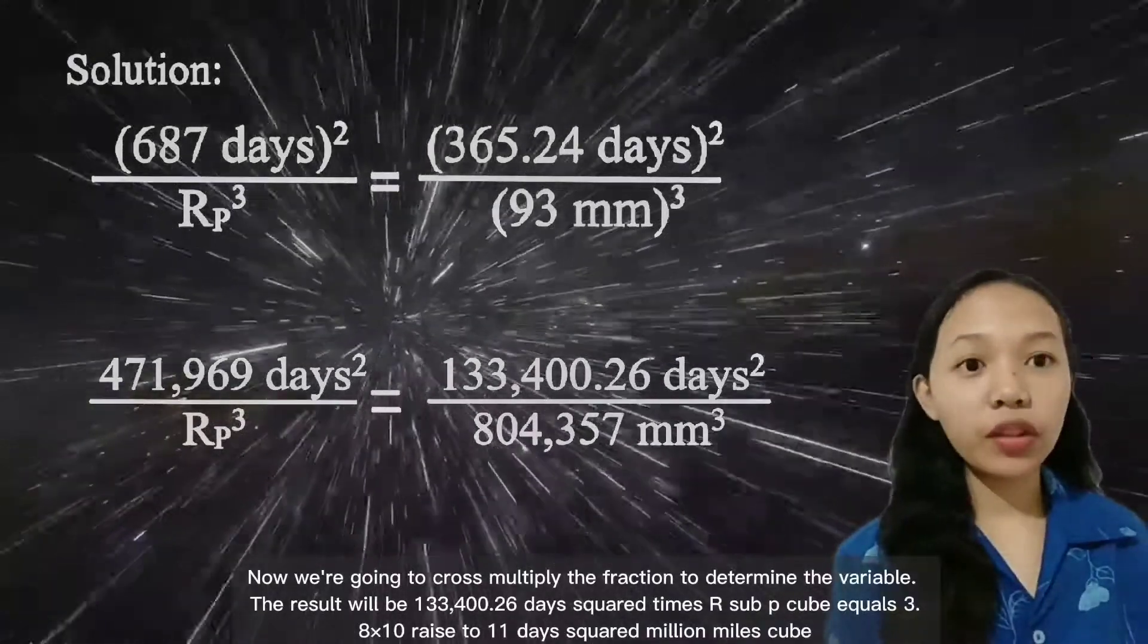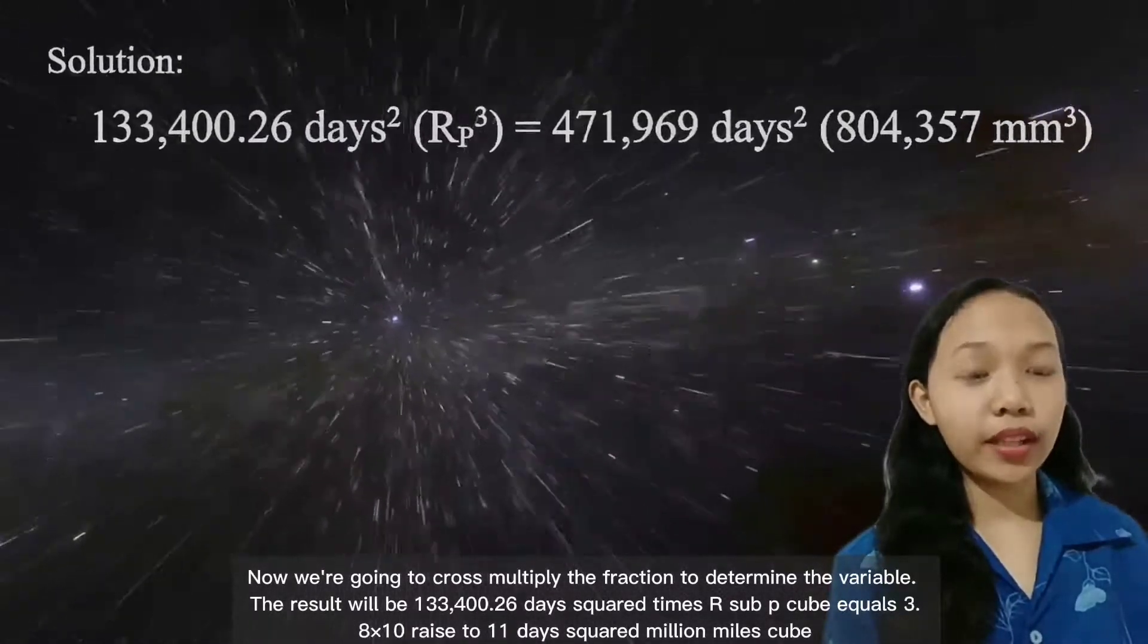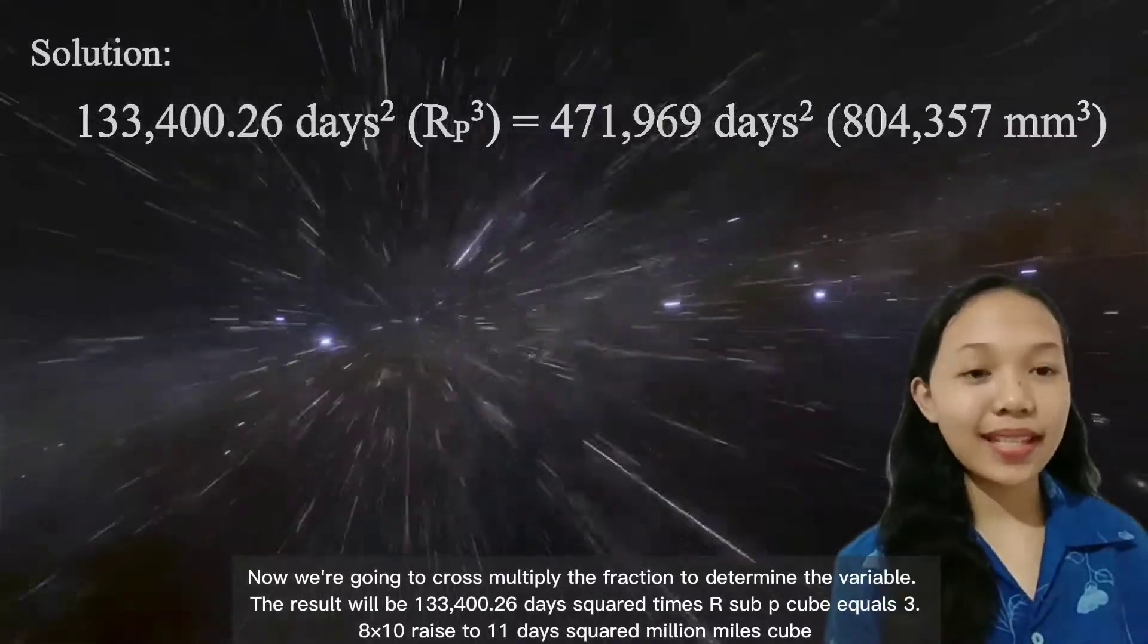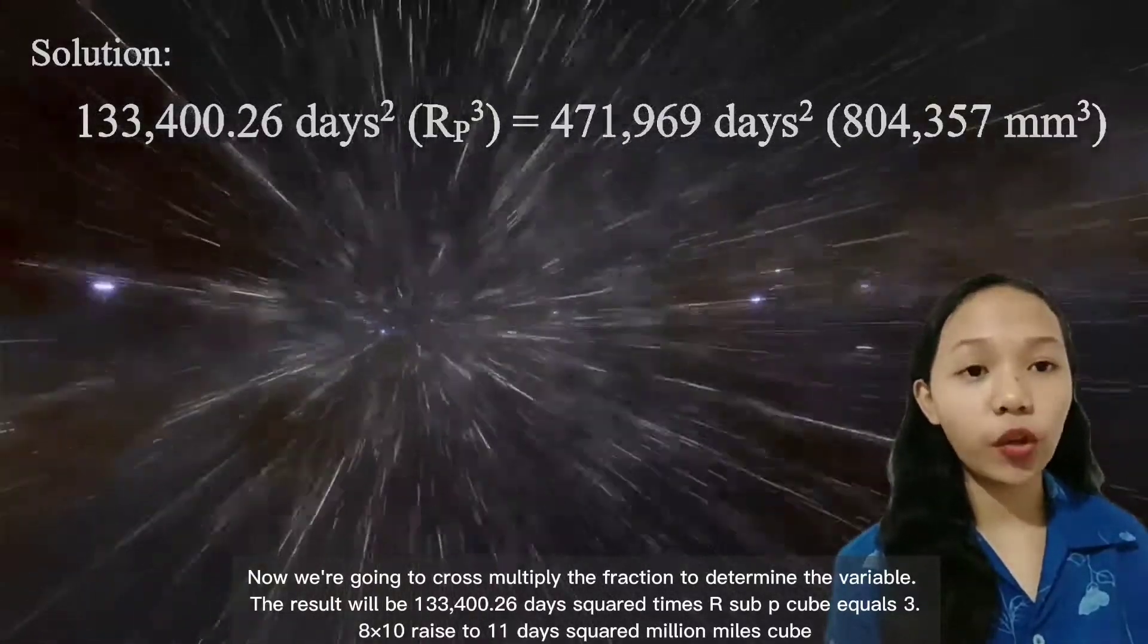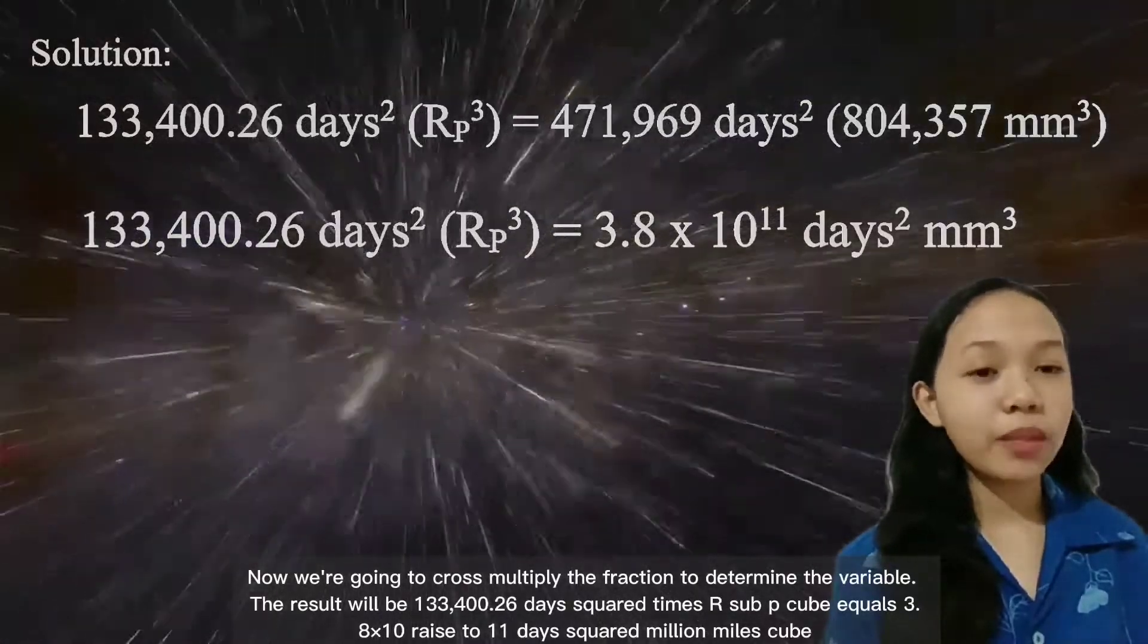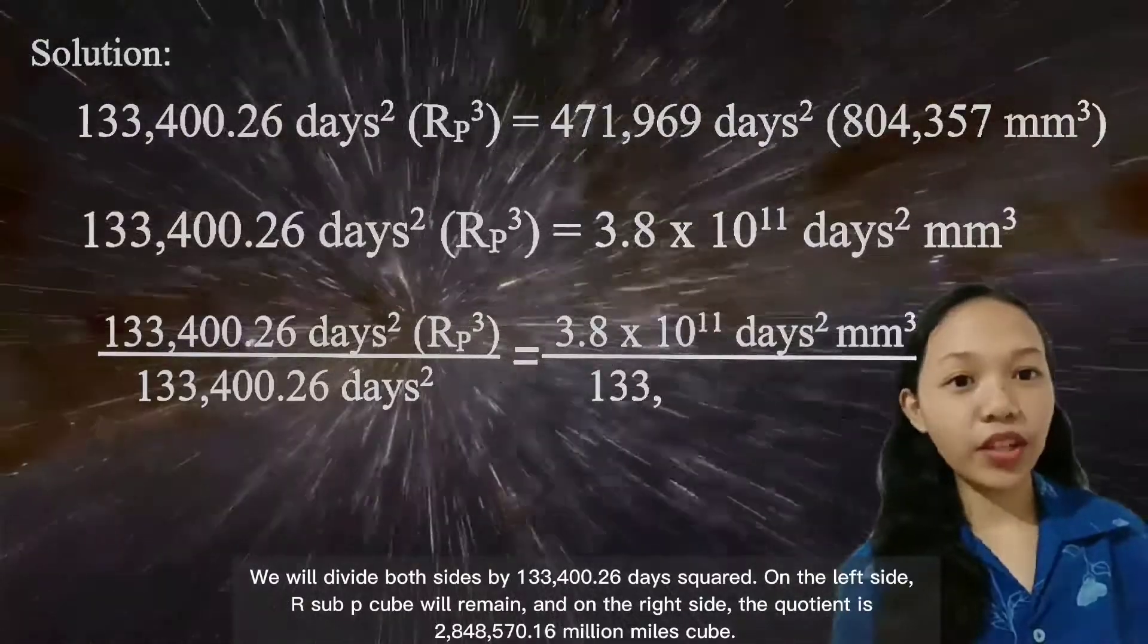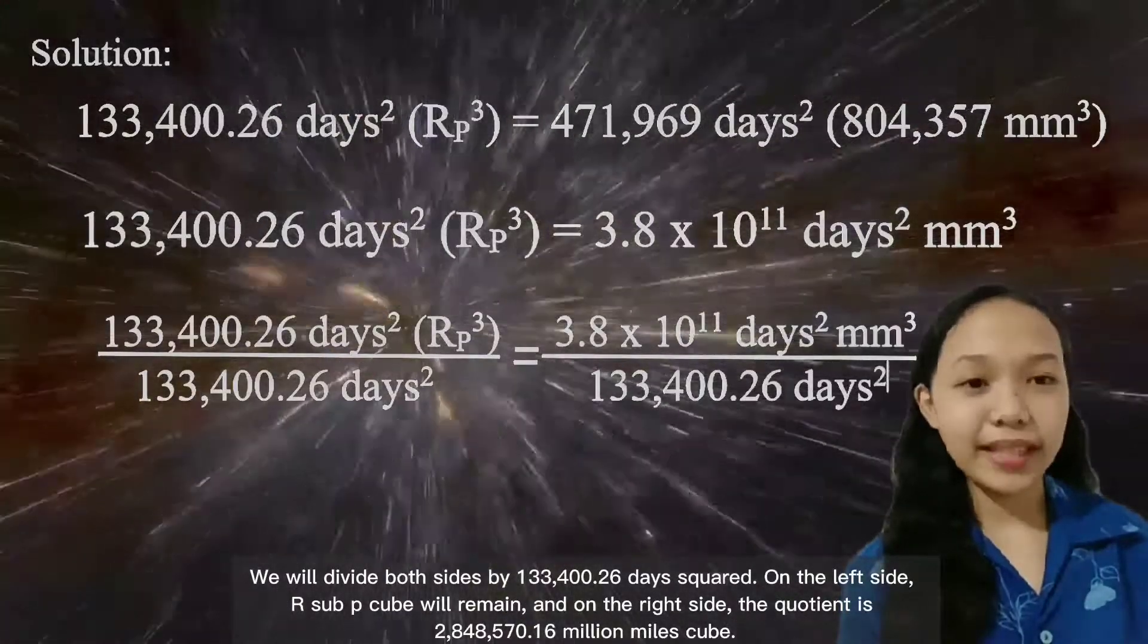Now, we're going to cross multiply the fraction to determine the variable. The result will be 133,400.26 days squared times R sub P cubed equals 3.8 times 10 raised to 11 days squared million miles cubed. We will divide both sides by 133,400.26 days squared.